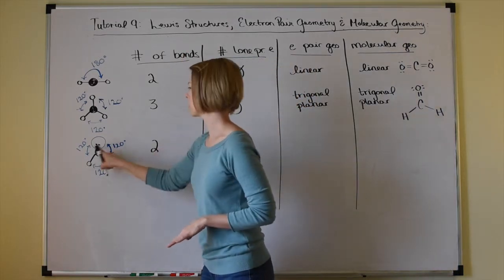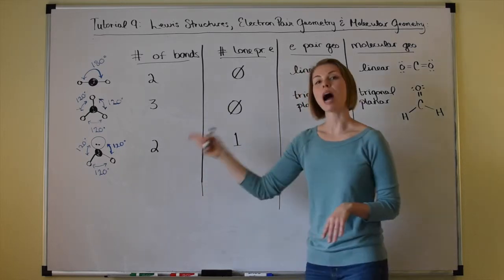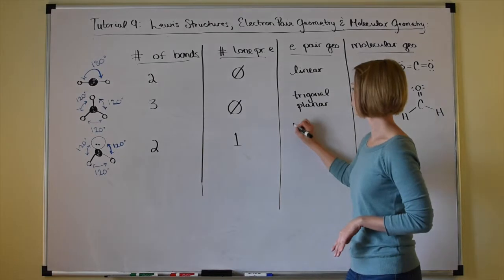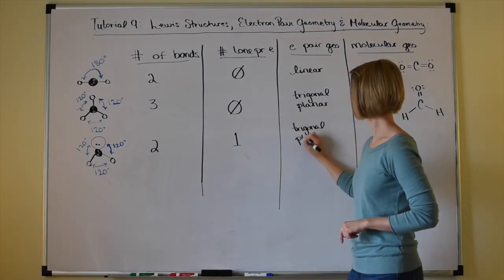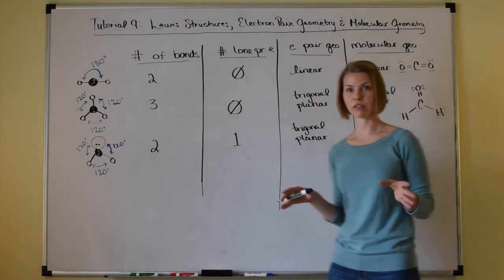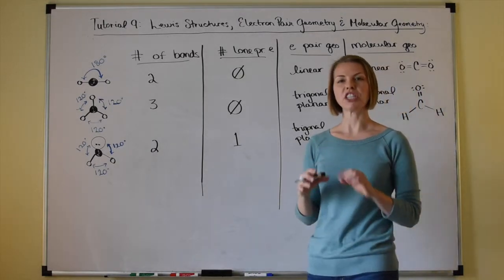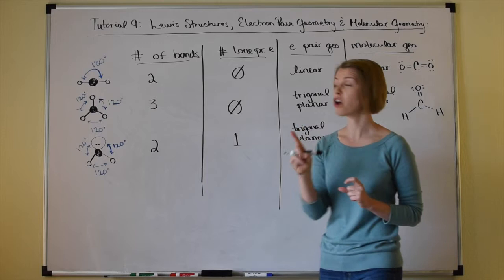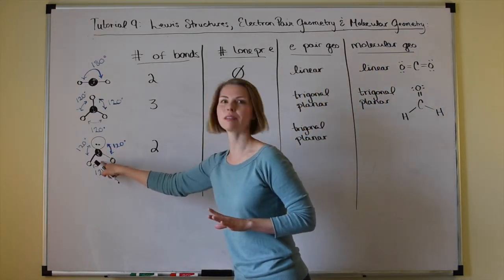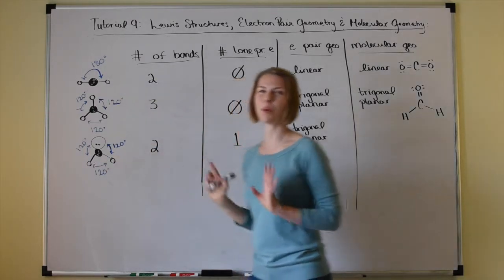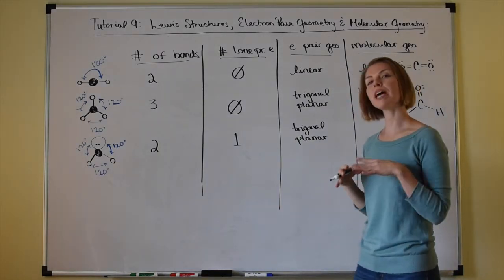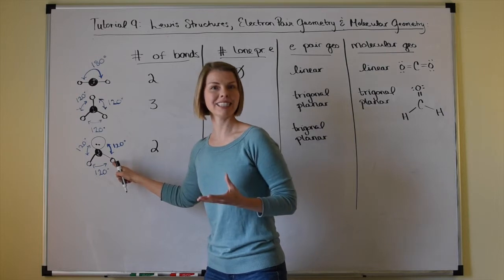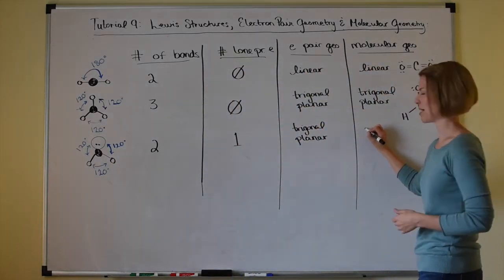Number of bonds: two. Number of lone pairs: one. The electron pair geometry still accounts for three charge clouds, so it's still going to be trigonal planar. But the molecular geometry focuses on the shape of the atoms themselves — when we ignore the lone pair, we're left with a little bent shape. We call this molecular geometry bent.